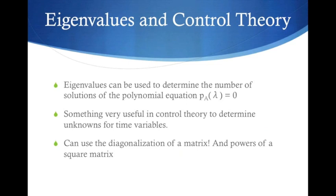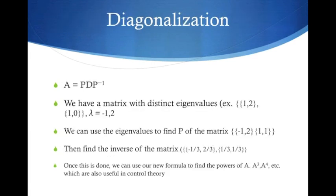We can use the diagonalization of a matrix and powers of a square matrix. For diagonalization, remember A = PDP^-1. We have a matrix with distinct eigenvalues. For example, the matrix {{1,2},{1,0}} has eigenvalues -1 and 2.